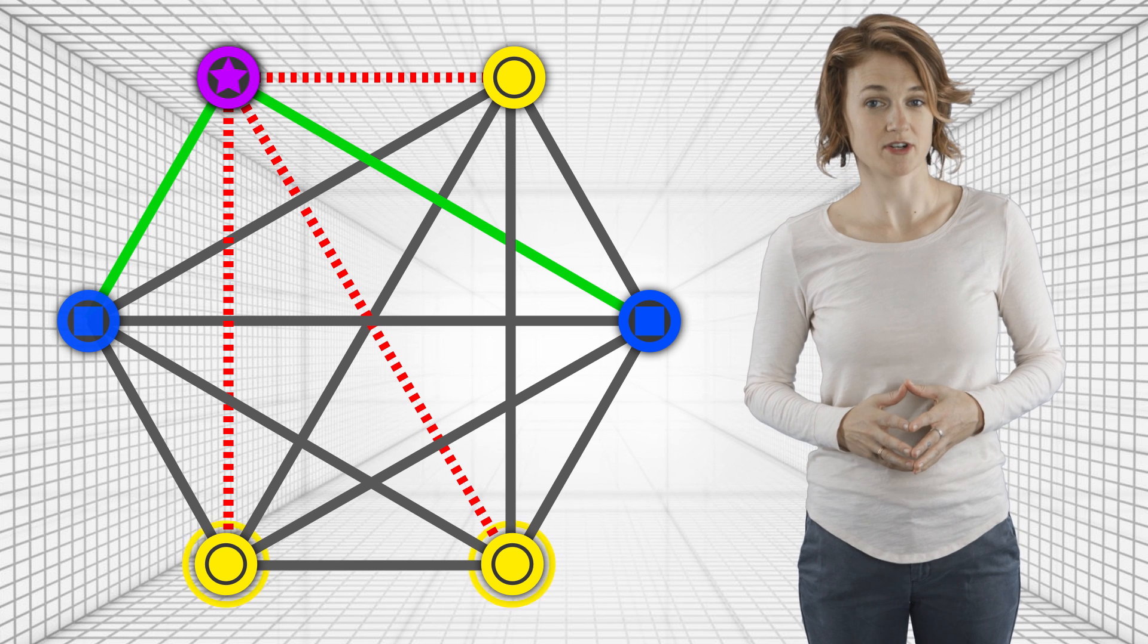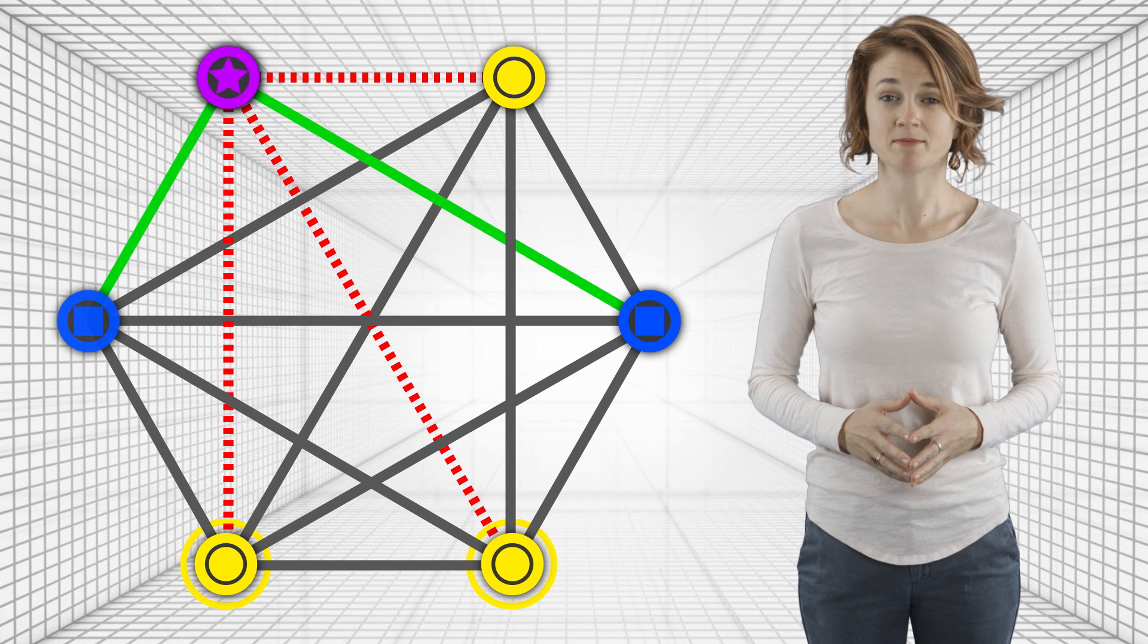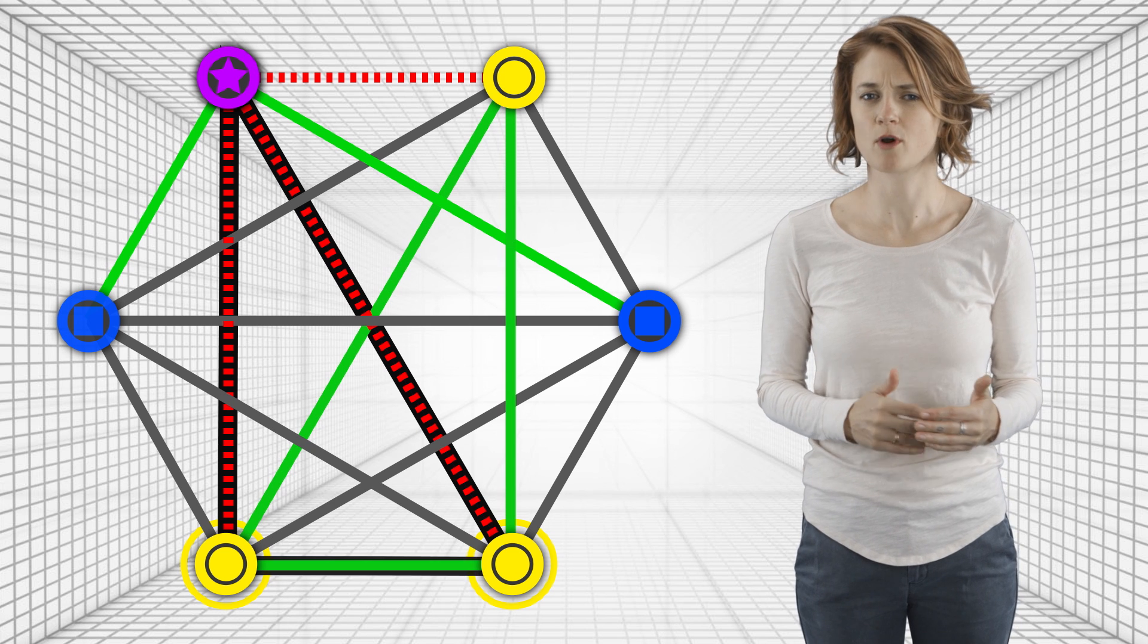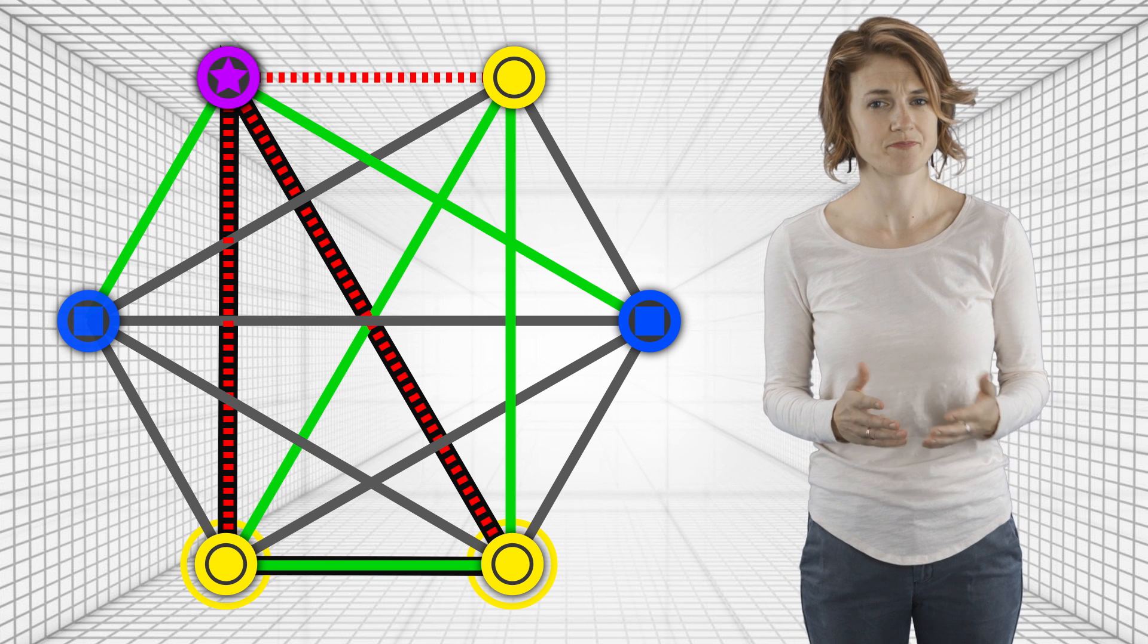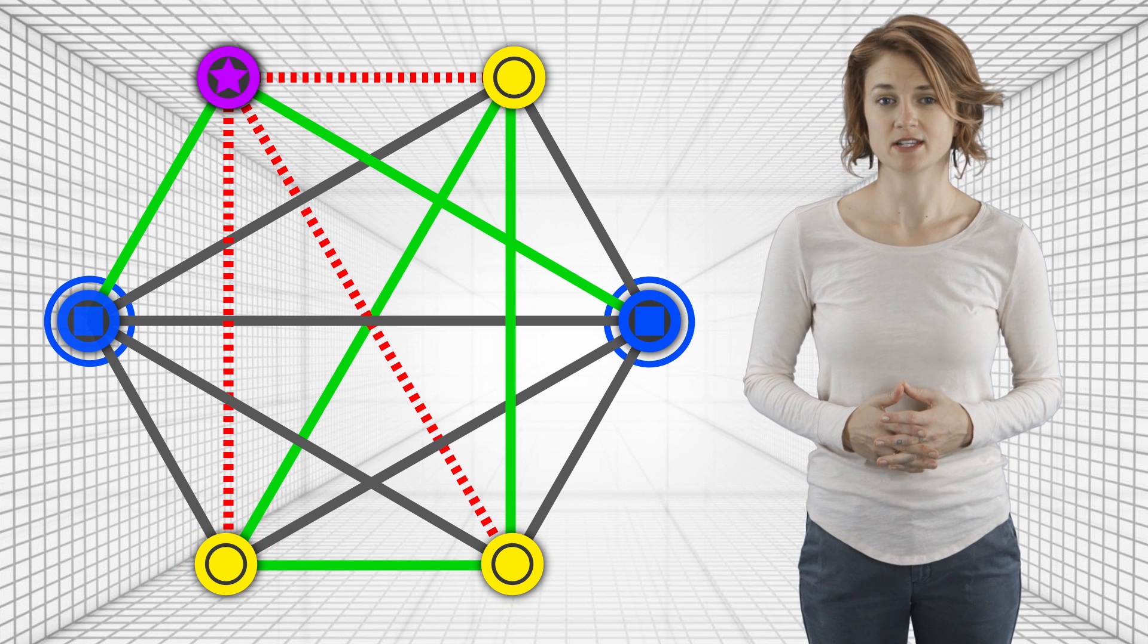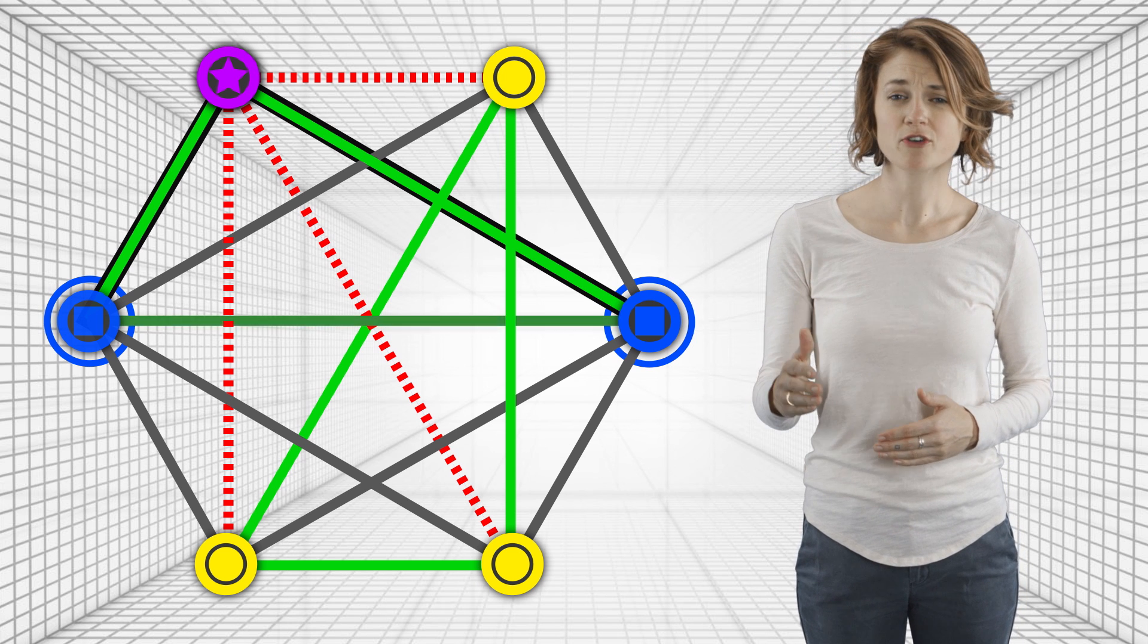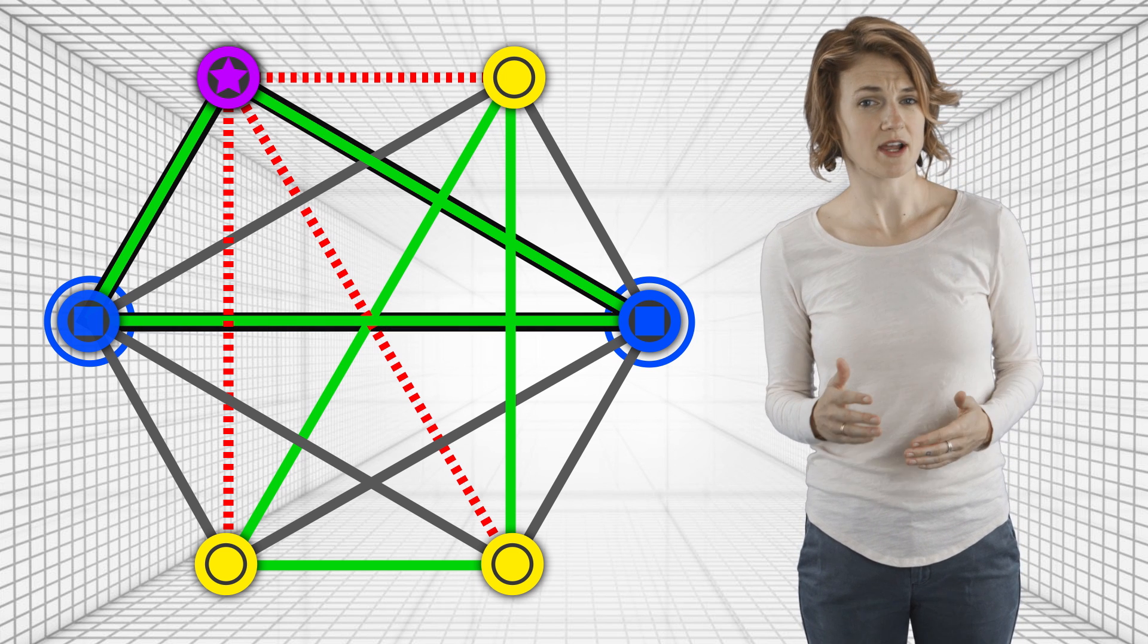Let's look at two yellow vertices. They are both enemies with the purple vertex, so they must be friends with each other to form a balanced triangle. Two blue vertices are both friends with the purple vertex, so they must also be friends to form a balanced triangle.